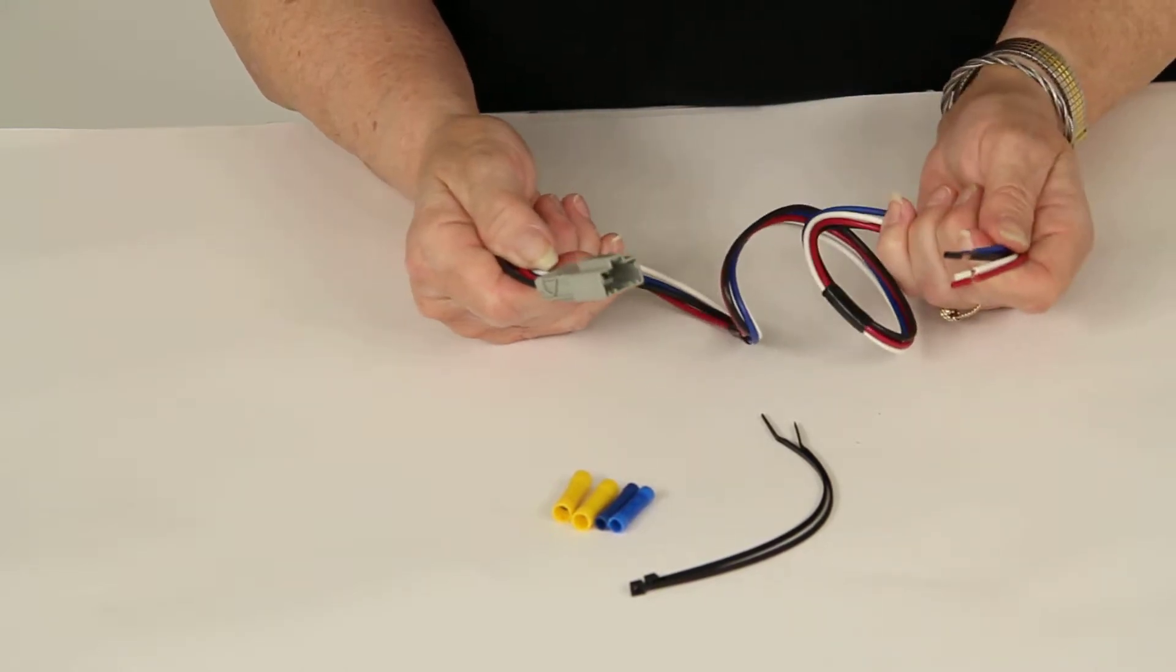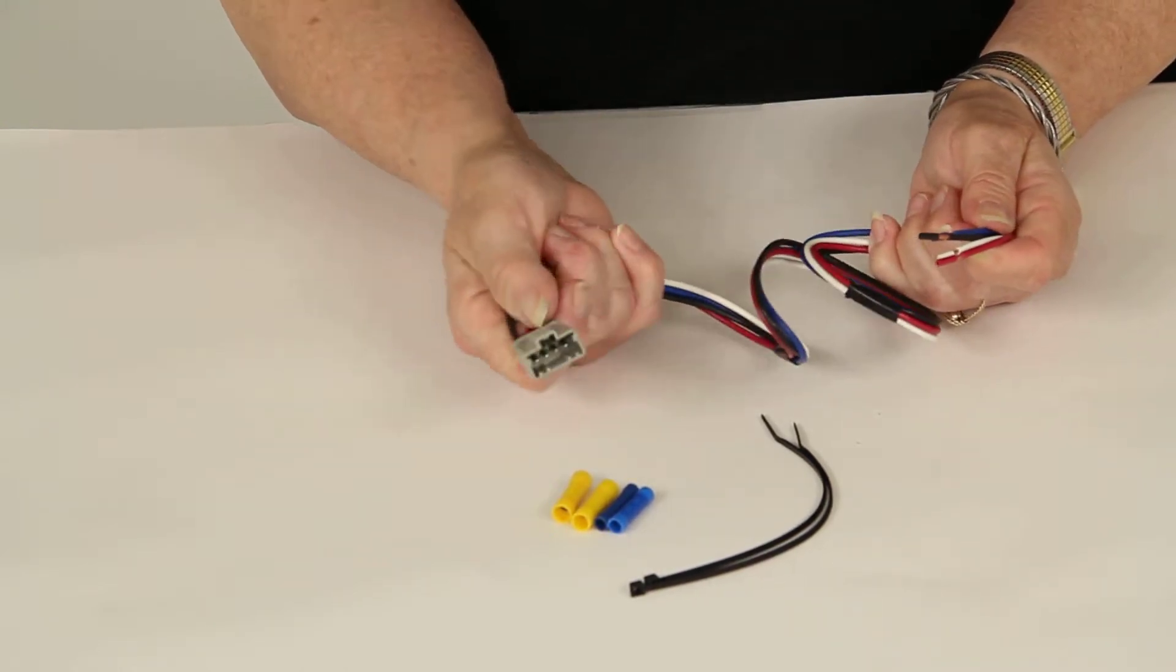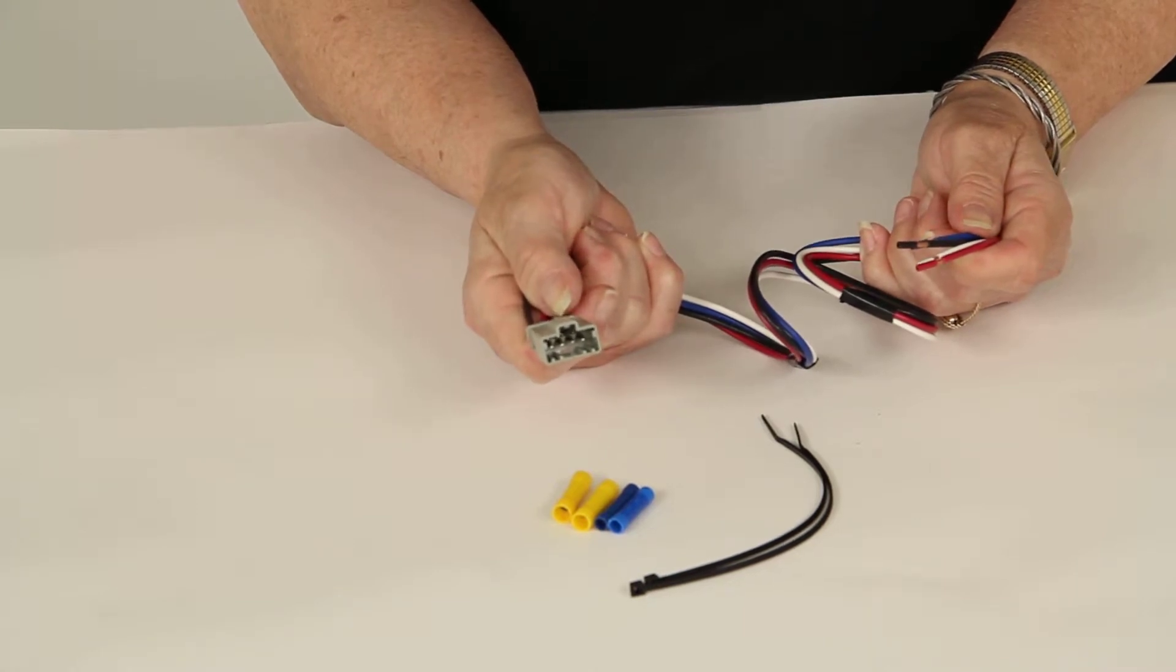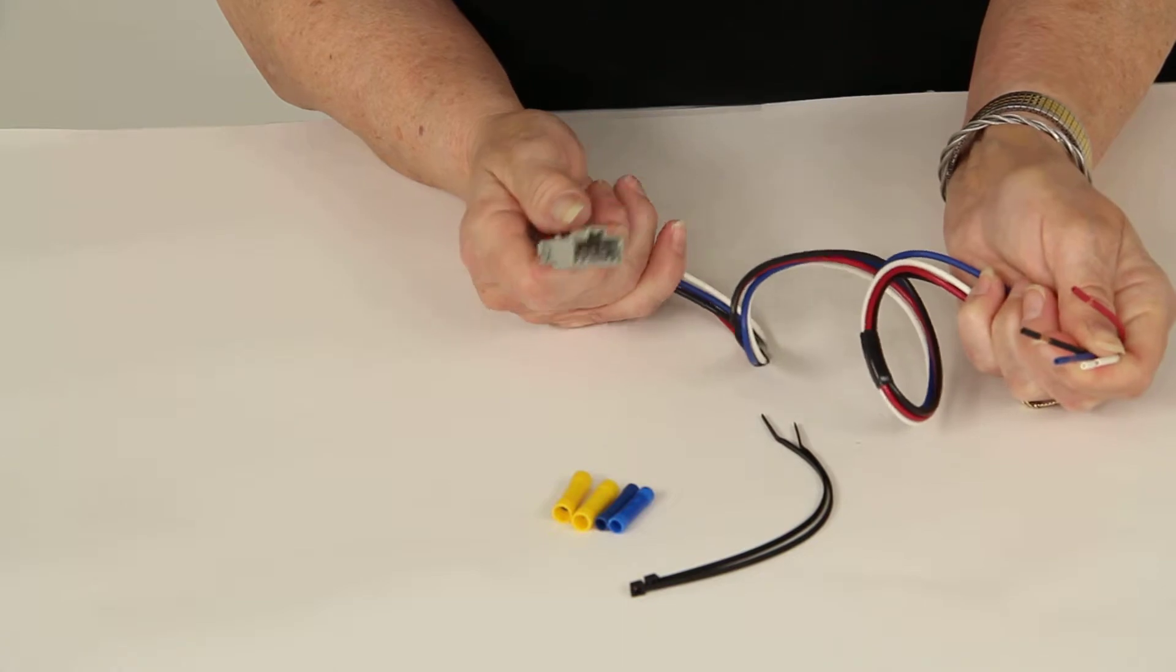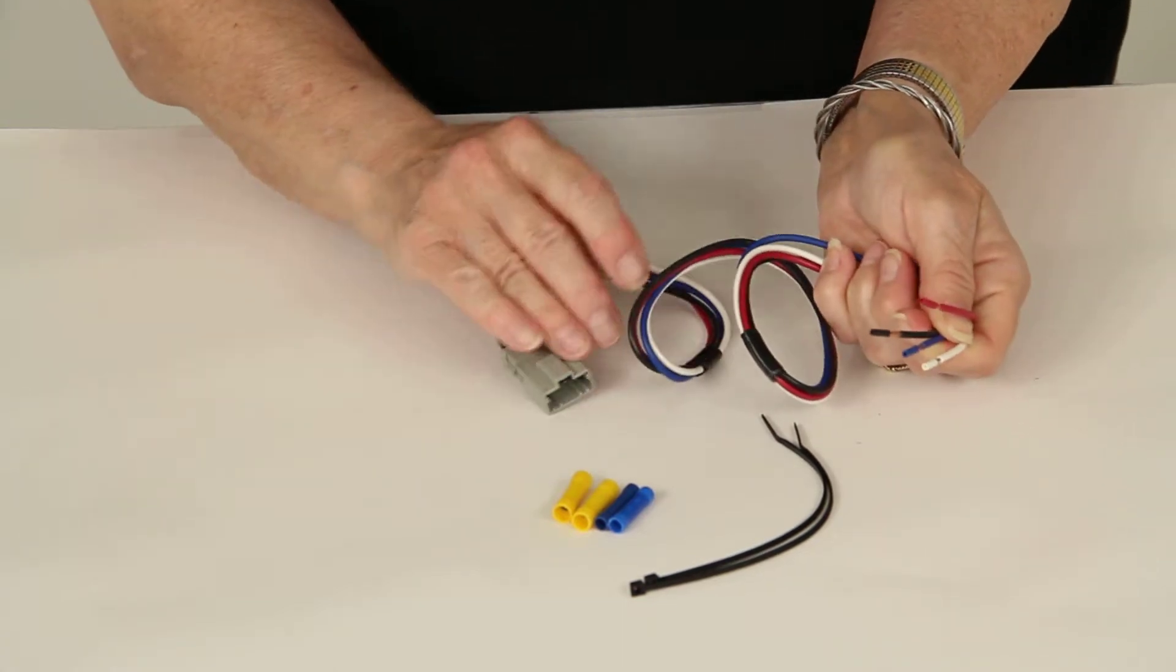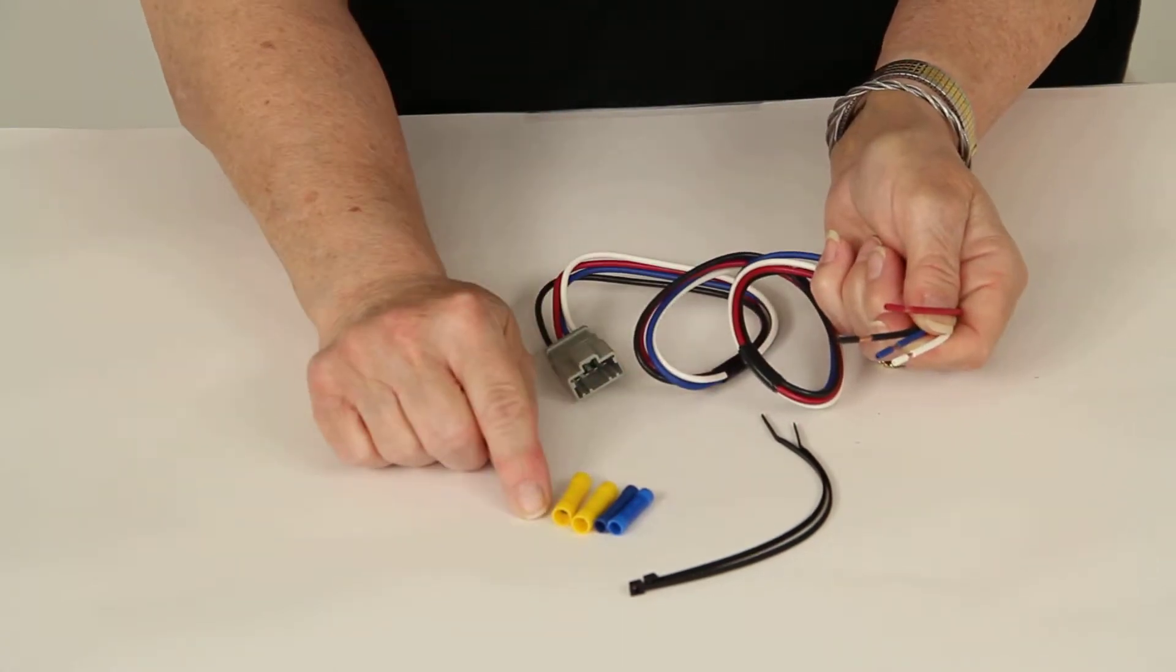This is an easy way to provide power to your brake controller. You simply plug the gray plug into the factory port that's under your dashboard and then you connect the pigtail wiring to the back of your brake controller using the included butt connectors.